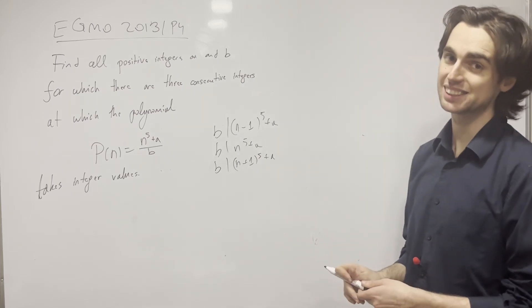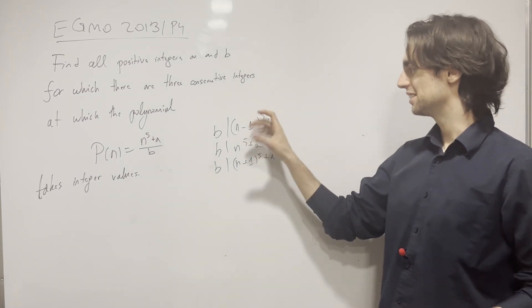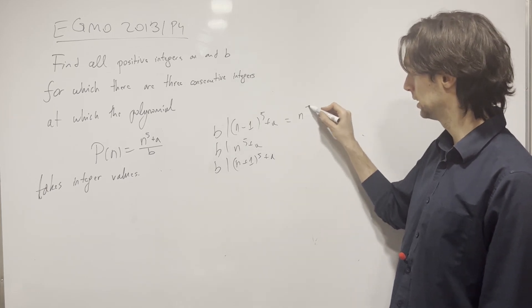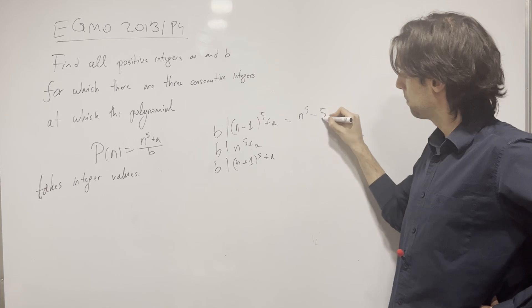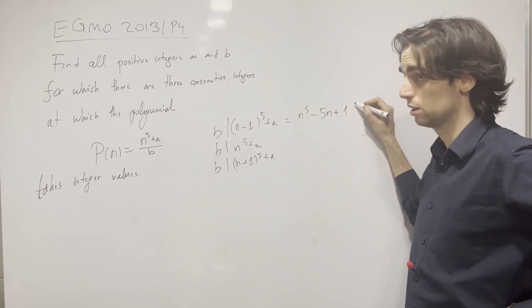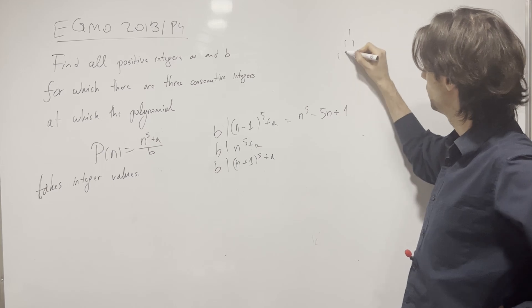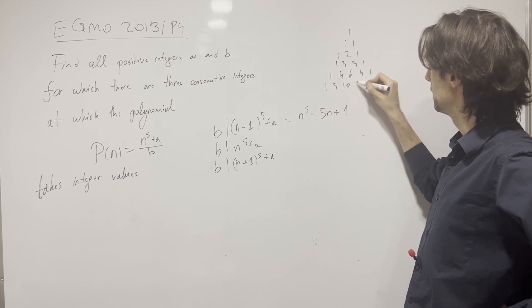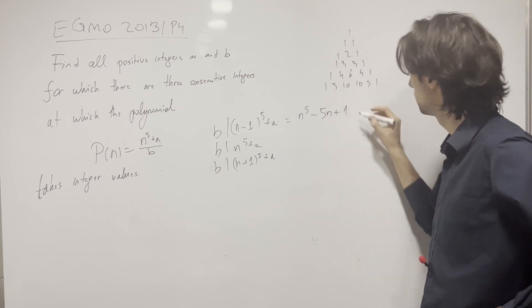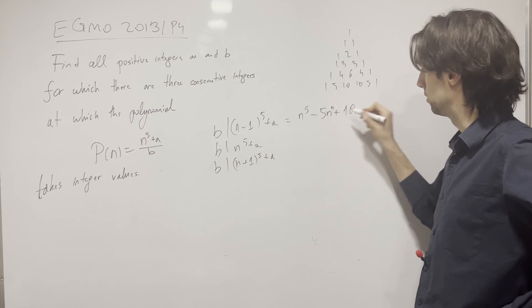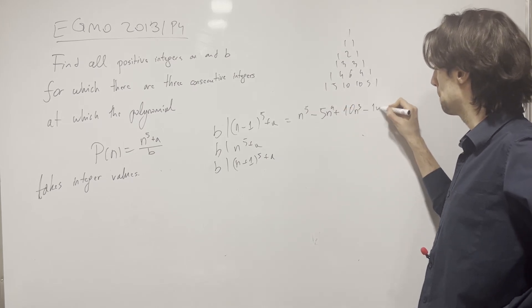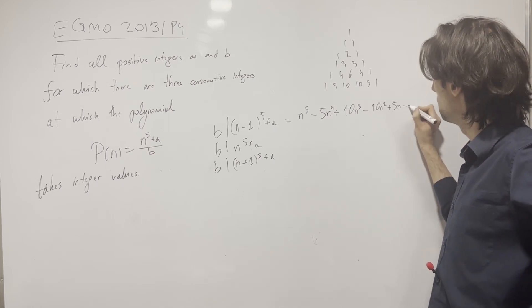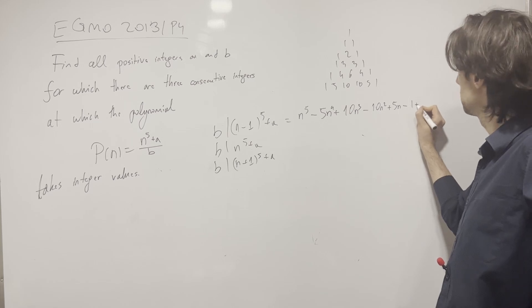That's pretty much what this means. And I'm writing n-1 and +1 because then it's easier to do subtractions. So this is in fact equal to... You know, you write Pascal's triangle just to make sure that you don't mess anything up. It's n^5 - 5n^4 + 10n^3 - 10n^2 + 5n - 1, plus a.